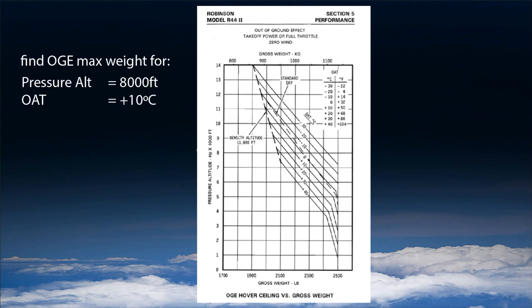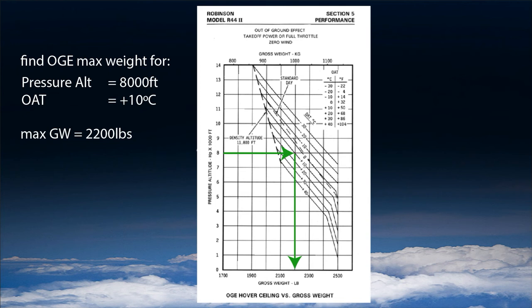A common question is: find the OGE maximum gross weight for pressure altitude 8,000 feet and OAT plus 10 degrees. This is the first important thing to note — we always need a combination of pressure altitude and OAT. So we go from the left side at pressure altitude 8,000, intercept the plus 10 degree OAT line, then go down to find the OGE max gross weight of 2,200 pounds. That's straightforward.